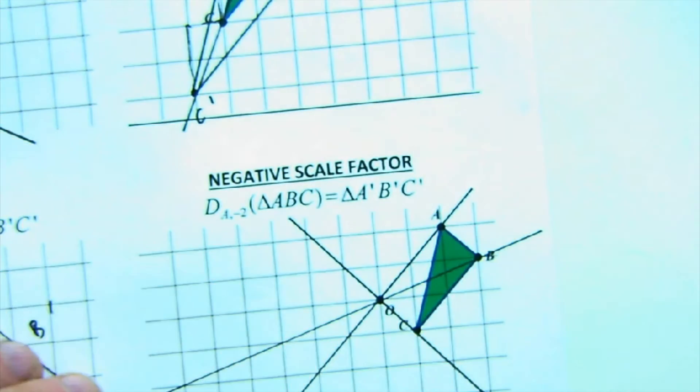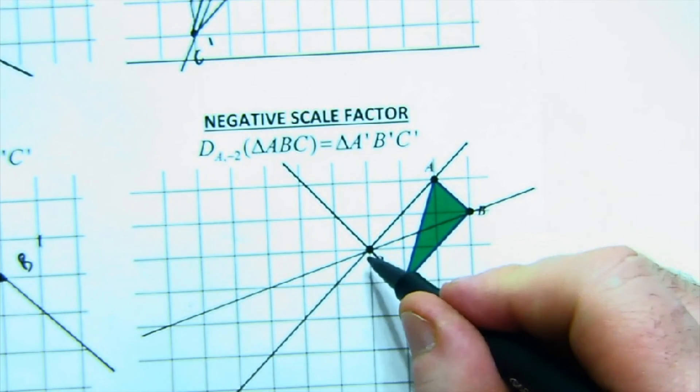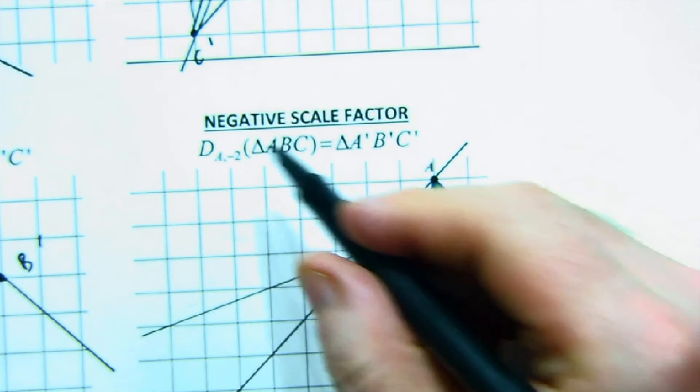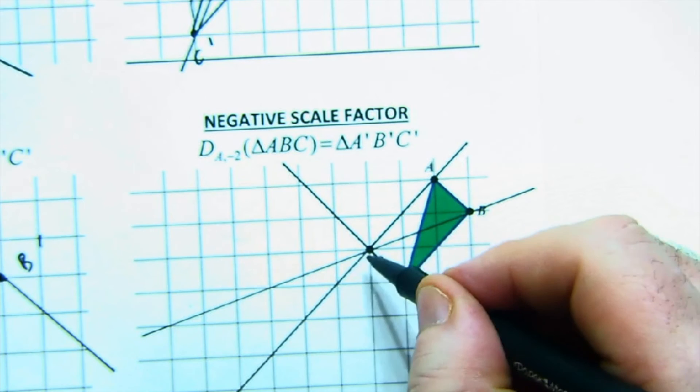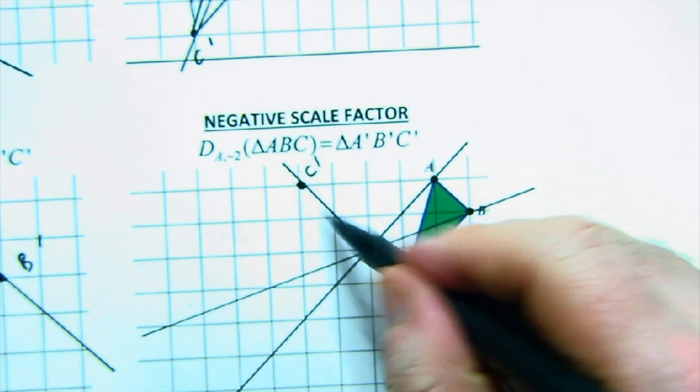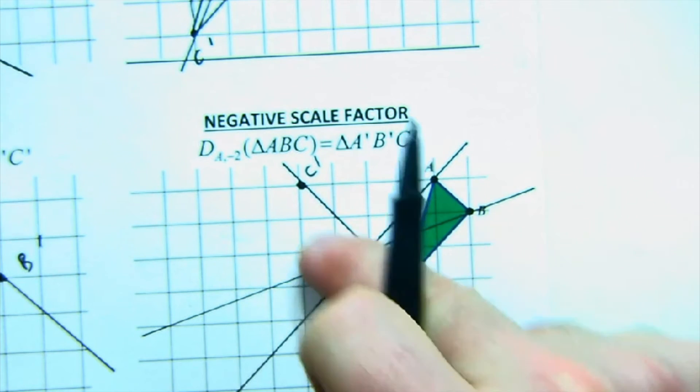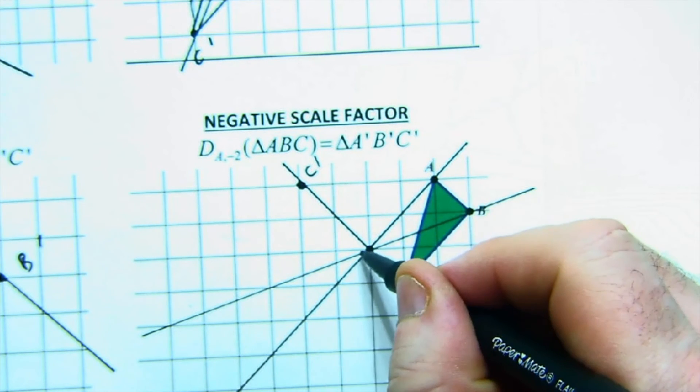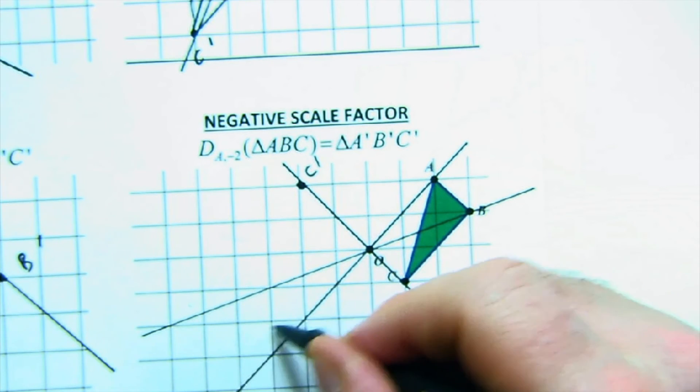And so what you actually do is see how I'm down one over one to get to C. I'm going to go two of those in the opposite direction. So one, one, one, one. Here would be going the opposite direction. See how C's here, so C prime's over here. A is two over two up. So I'm going to go the other way. Two over two down, two over two down.